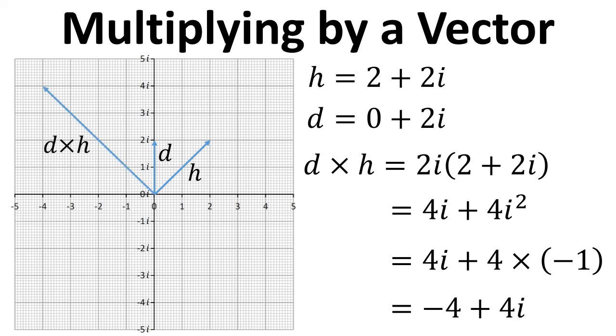So what we see is that d times h is a vector here. So we've increased the magnitude of h by a factor of 2, and that's because the magnitude of vector d is 2.